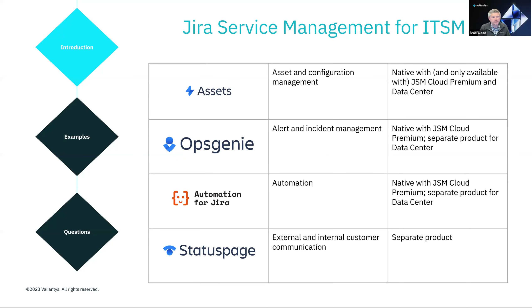Today we're talking about Jira Service Management for ITSM. We're going to talk through some of the applications used to showcase these capabilities, such as Assets — JSM's Asset and Configuration Management tool, native to JSM but only available with JSM Cloud Premium and JSM Data Center. Then OpsGenie, our alert and incident management system, native with JSM Premium and a separate product for Data Center. And Automation for Jira, which is completely out of the box with JSM — the only difference between tier levels being the number of allotted rule executions per month.